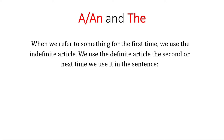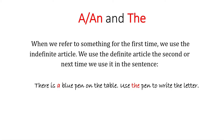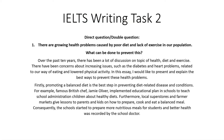We use the definite article the second time we use it in the same sentence or paragraph. For example: 'There is A blue pen on the table. Use THE pen to write the letter.' Or: 'Here is AN apple. The apple is red.'